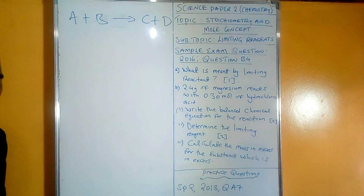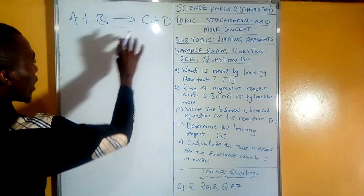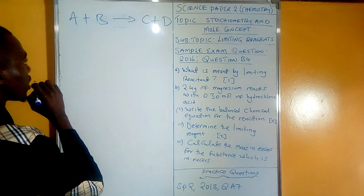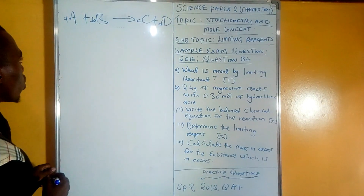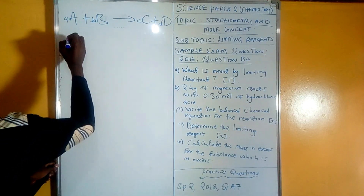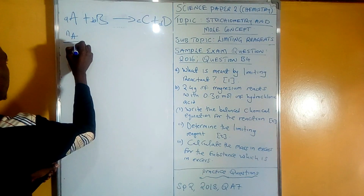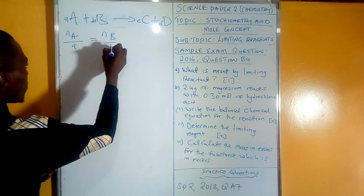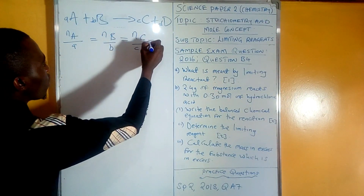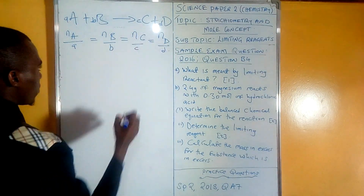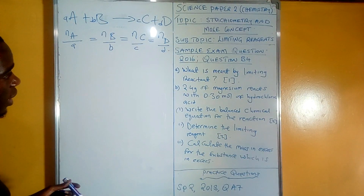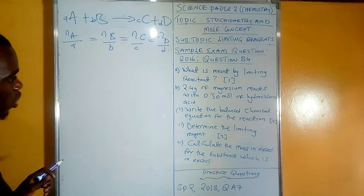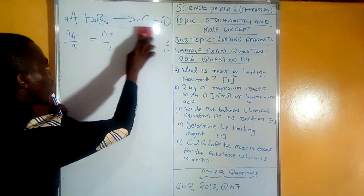What we mean by mole ratio is: when you write a chemical equation it always has to be balanced, and we use the coefficients to balance it. Say this reactant has coefficient a, this one b, this product c, and this one d. To express this equation in terms of its mole ratios, we say: moles of A / a = moles of B / b = moles of C / c = moles of D / d. It might look ambiguous now, so we'll deal with the actual calculations from the question on the board.